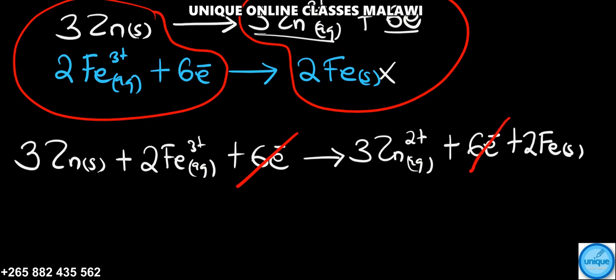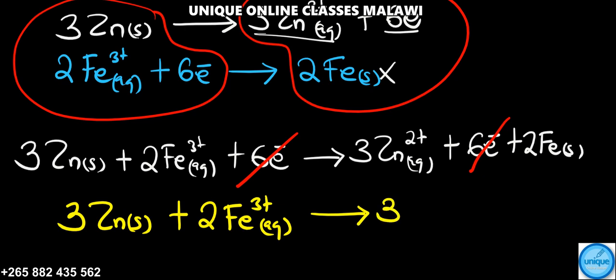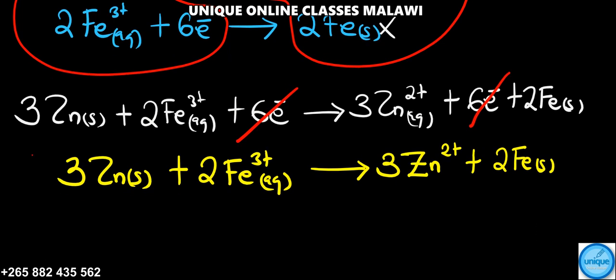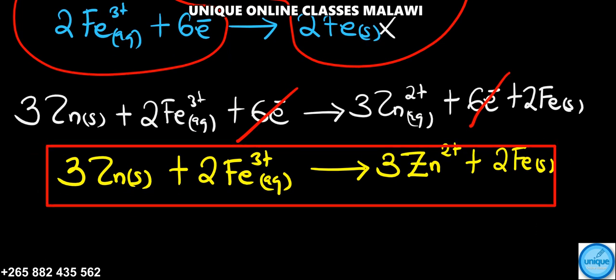Our final balanced redox equation is: 3Zn solid plus 2Fe³⁺ aqueous gives 3Zn²⁺ aqueous plus 2Fe solid. That's it, that's what is needed.